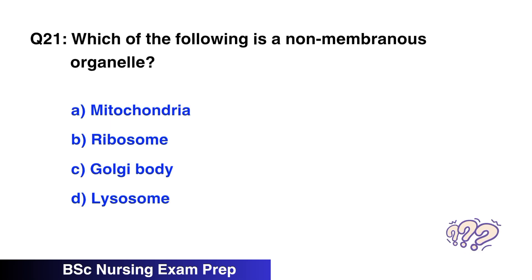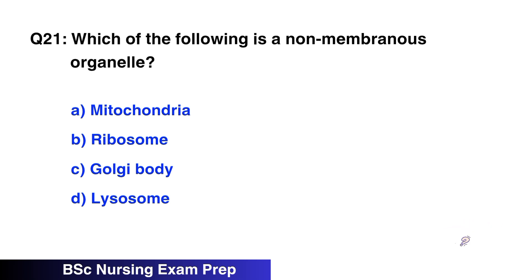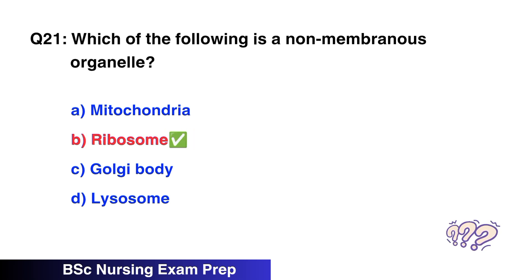Question number 21: Which of the following is a non-membranous organelle? The right option is B, ribosome. Question number 22: A genetic condition in which a female is born with only one X chromosome is called? The right option is A, Turner syndrome.